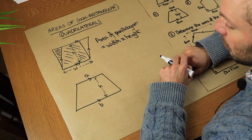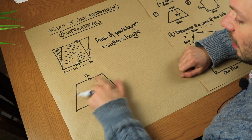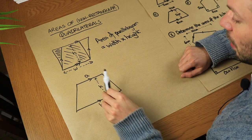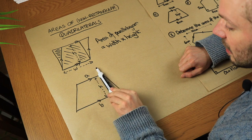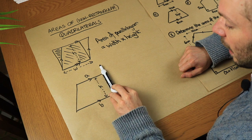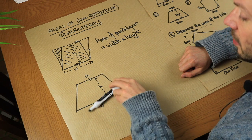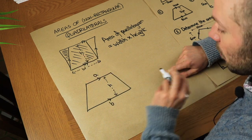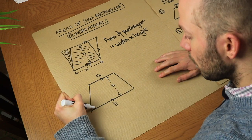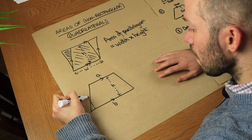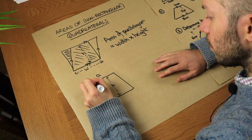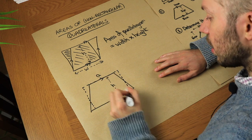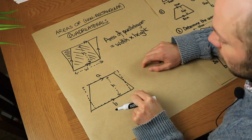What about this trapezium here? We've got these two parallel sides and the perpendicular height. By perpendicular I mean that height is at right angles to these two parallel sides. Now we can use the same trick as we did with the parallelogram — we can sort of form a rectangle.